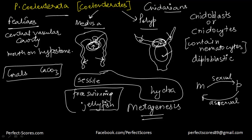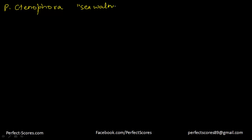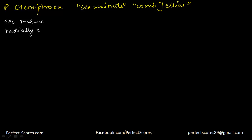So let's move on to the next phylum, which is going to be Ctenophora. Now in phylum Ctenophora, the animals are known as ctenophores and they are also known as sea walnuts or even as comb jellies. Some of the common features are that they are exclusively marine — meaning only marine; no freshwater ctenophores can be found. They are radially symmetrical, just like the earlier phylum — that includes Hydra and jellyfish.